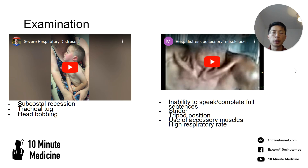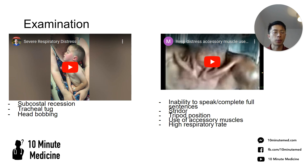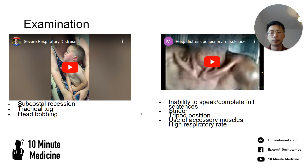In this gentleman, he has inspiratory stridor and is leaning forward in a tripod position. He's using all of his accessory muscles and has a high respiratory rate. If you tried to speak to him, you might find it difficult — he may be unable to complete his sentences.